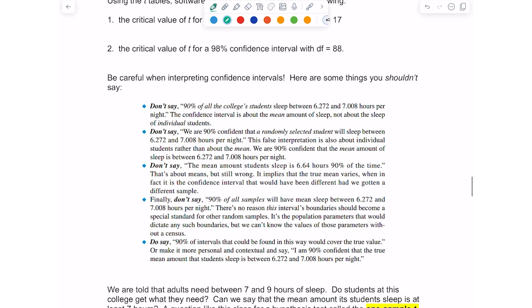Finally, don't say 90% of all samples will have a mean of sleep between 6.272 and 7.008 hours per night. There's no reason this interval boundary should become a special standard for other random samples. It's the population parameters that would dictate any such boundaries, but we can't know the values of those parameters without a census.